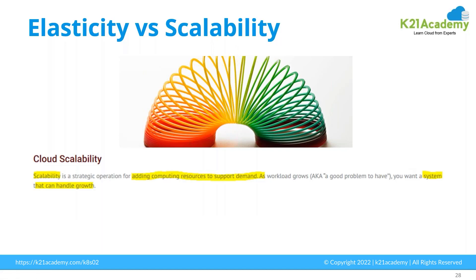We'll also talk about elasticity versus scalability. Scalability is a strategic operation of adding compute resources to support demand. If your application needs more resources, your environment should be able to scale up immediately to meet the business requirement. For example, if you're running an application with 2 GB memory and 1 CPU and utilization reaches 90% during peak time, your environment should easily scale to add more resources to support that demand.